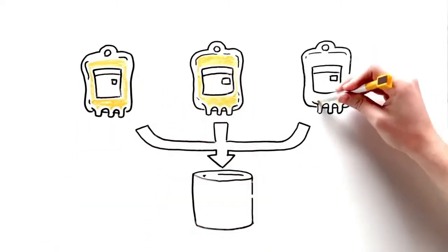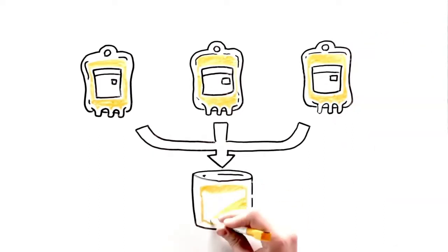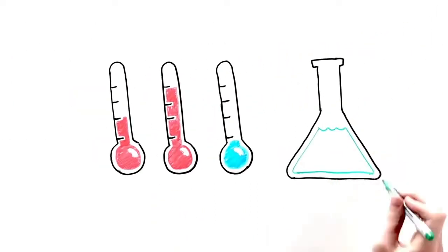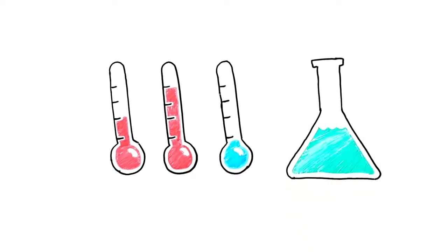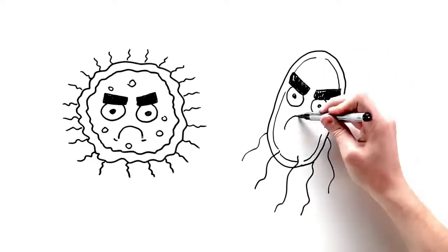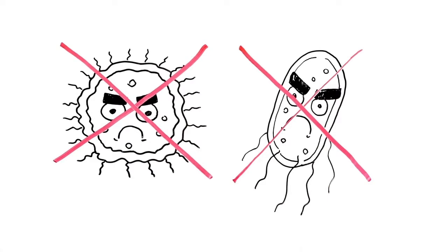At the fractionator, thousands of plasma donations are pooled together, exposed to varying temperatures, and treated with chemicals that make similar proteins stick together, using processes which also remove potential pathogens. Clusters of proteins that share the same properties are the key ingredients for a plasma protein product.